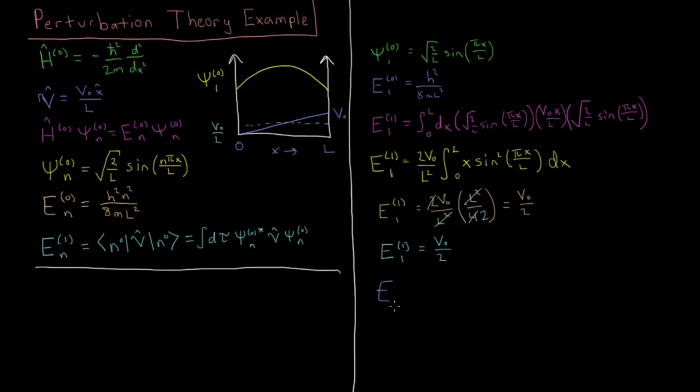So then putting that together with the zero-order energy, we have that our total energy is going to equal the zero-order energy, h-squared over 8 ml-squared, the particle in a box energy, plus this first-order correction, v-naught over 2. And then if we did second-order perturbation theory, we would get a second-order correction to this energy, third-order, fourth-order, etc.